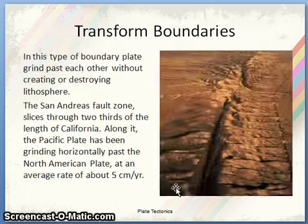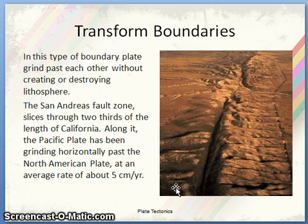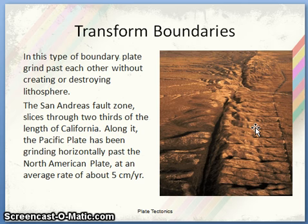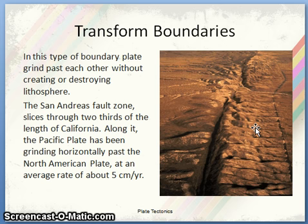Transform boundaries are where plates grind past each other without creating or destroying lithosphere, hence also called conservative plate margins. The San Andreas Fault zone slices through two-thirds of the length of California. Along it, the Pacific plate has been grinding horizontally past the North American plate at an average rate of about 5 cm per year.